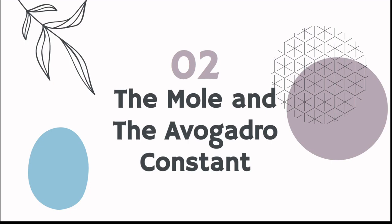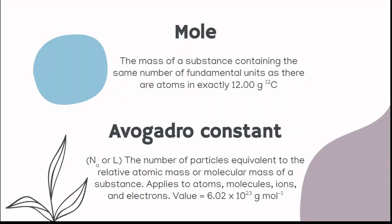So the second section is the mole and the Avogadro constant. The mole is the mass of a substance containing the same number of fundamental units as there are atoms in exactly 12 grams of carbon-12. So this is somewhat based on the unified atomic mass unit, the AMU, but it's not exactly. You generally understand the applications of it, not necessarily the definition. But we also have the Avogadro constant, which is N sub A, or just L.